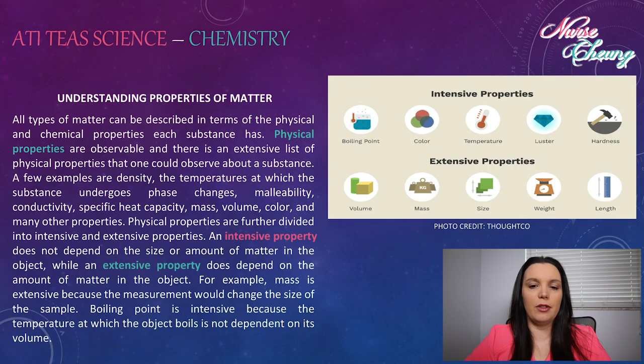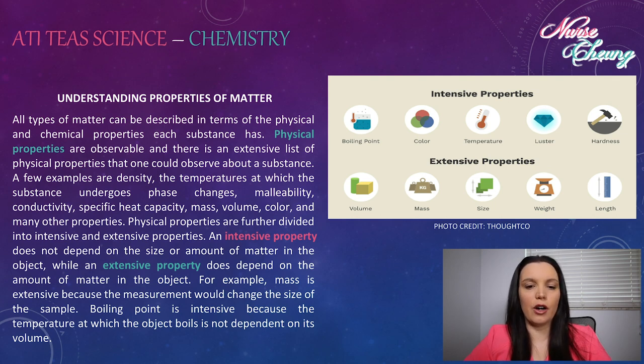All types of matter can be described in terms of the physical and chemical properties each substance has. Physical properties are observable and there is an extensive list of physical properties that one could observe about a substance. For example, there is density, the temperature at which the substance undergoes phase changes, conductivity, specific heat capacity, mass, volume, color, and many other properties.